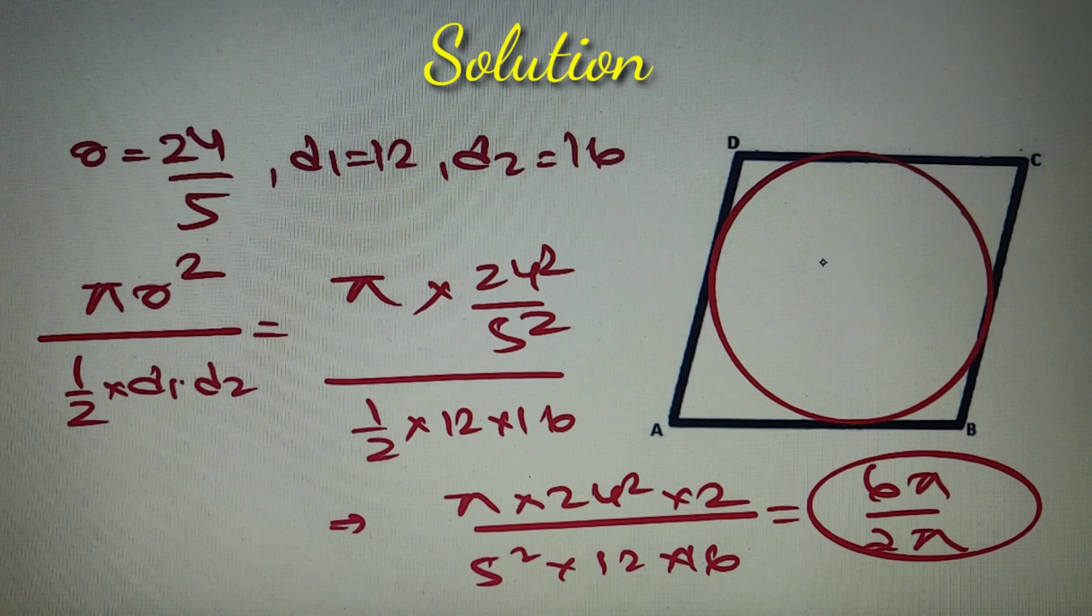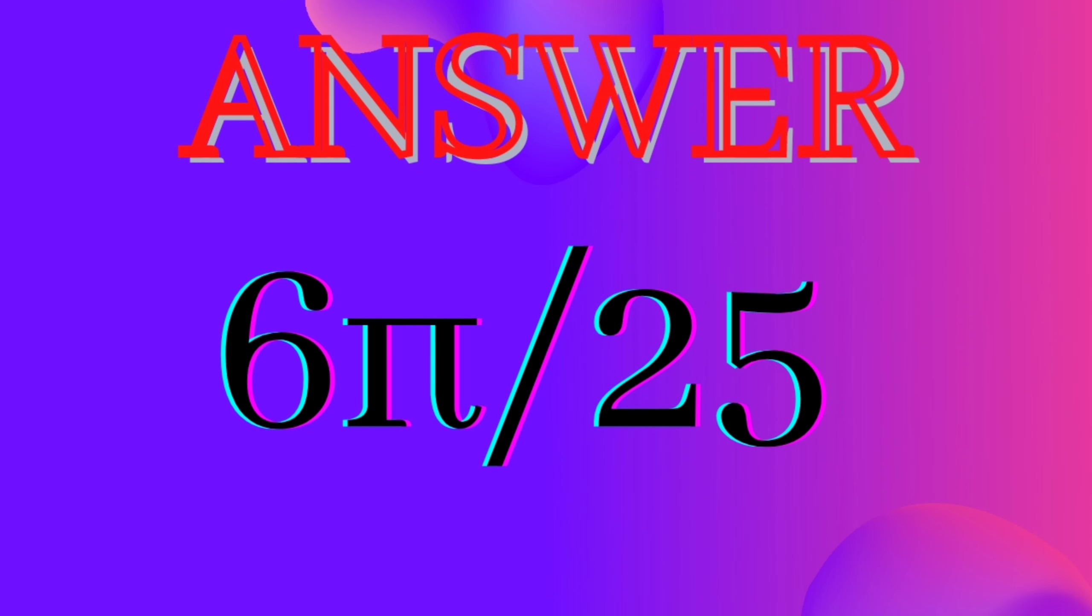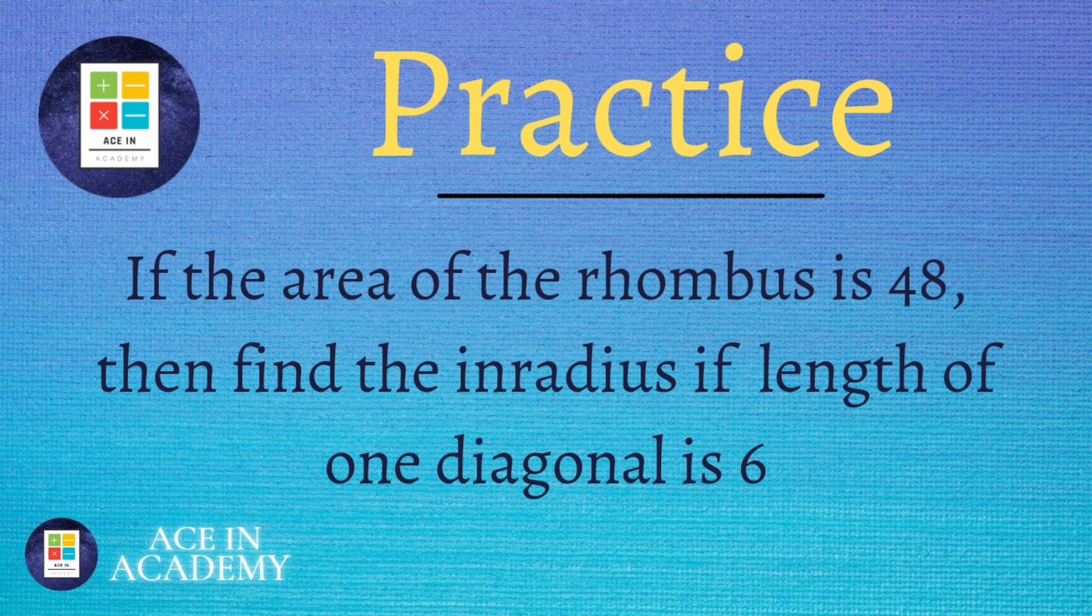So our answer is 6 pi by 25 for the ratio of the area of the circle to that of the area of the rhombus.